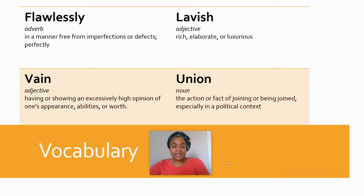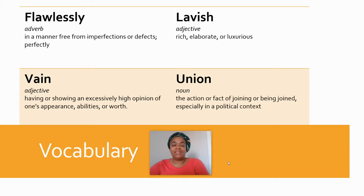Vain. Vain is an adjective. Vain means having or showing an excessively high opinion of one's appearance, abilities, or their worth. Vain.